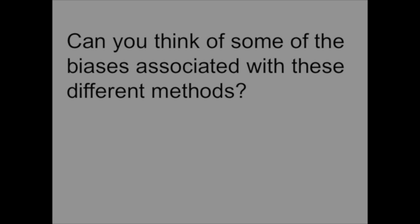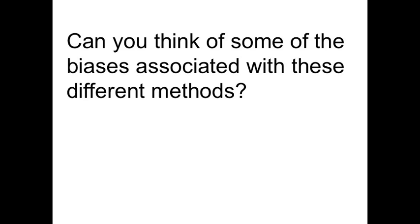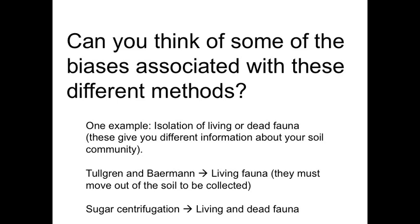Can you think of some of the biases associated with these different extraction methods? One example is whether the isolated animals are living or dead. The Tullgren and Baermann funnel methods isolate living fauna, while the sugar centrifugation method collects both living and dead fauna, specifically nematodes.